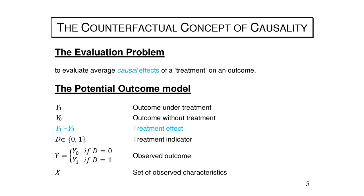The potential outcome model highlights how the outcome Y may depend on your treatment choice — treated one or treated zero — by defining two separate variables for each state of treatment. Y1 is the value of the outcome if the individual is treated, and Y0 is the value without treatment. So thinking of a labour market program where Y is earnings, we can think of earnings if we participate and earnings if we don't. The treatment effect is naturally defined as the difference in the two potential outcomes.